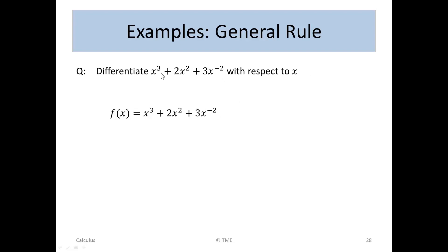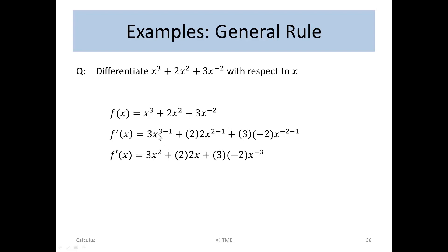Here's another example: differentiate x cubed plus 2x squared plus 3x to the minus 2. For x cubed it becomes 3x to the 3 minus 1, or 3x squared. For 2x squared, it's 2 times 2x to the 2 minus 1. For 3x to the minus 2, it's 3 times minus 2 times x to the minus 2 minus 1. Tidying up: 3x squared, plus 2 times 2x equals 4x, plus 3 times minus 2 equals minus 6, x to the minus 3.